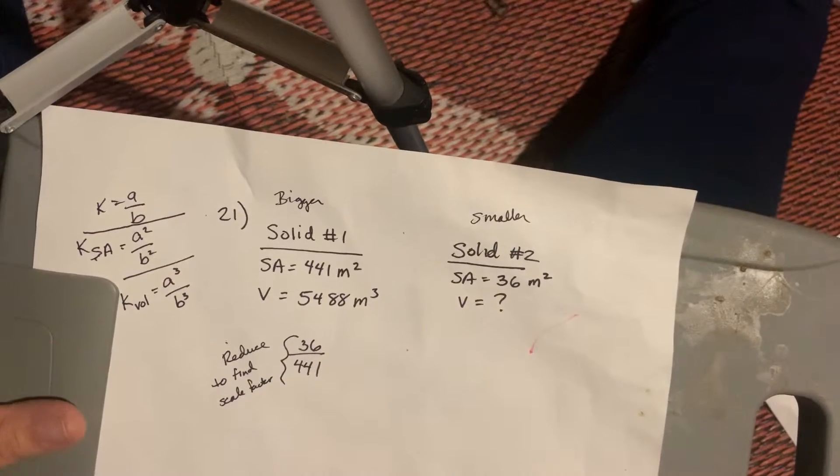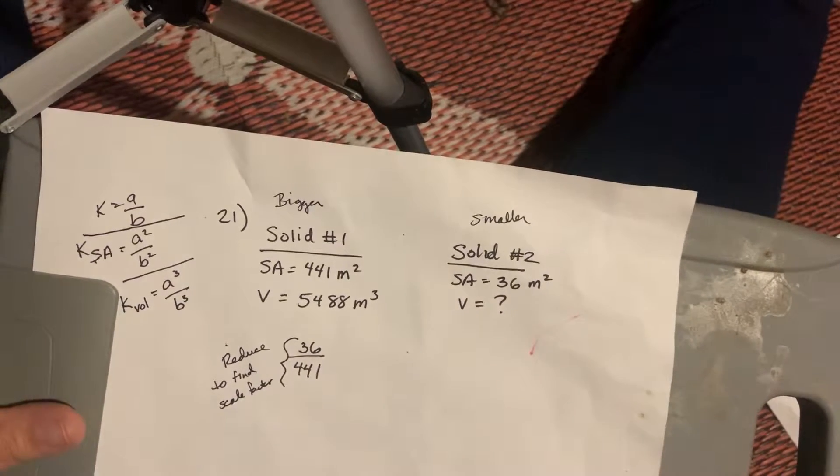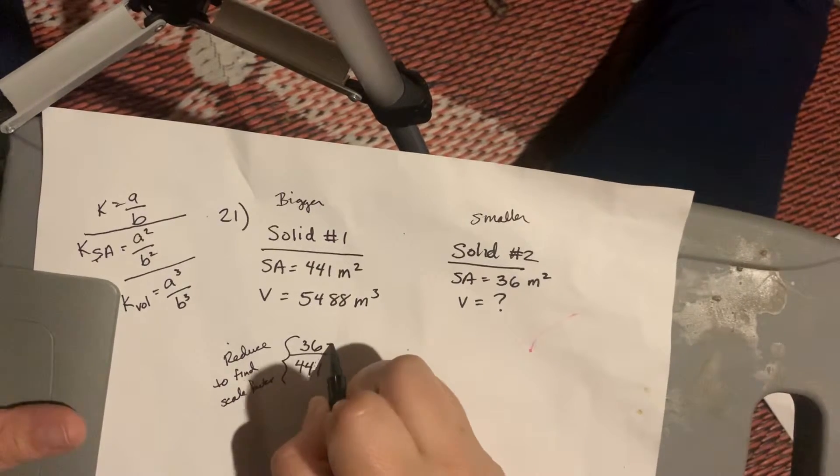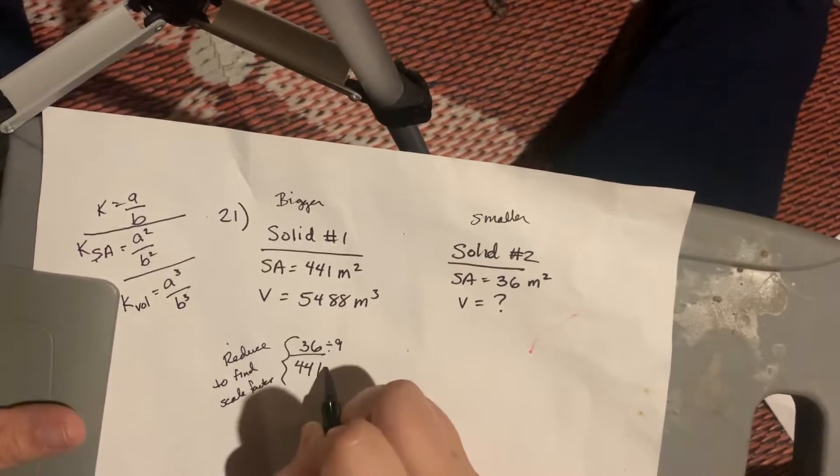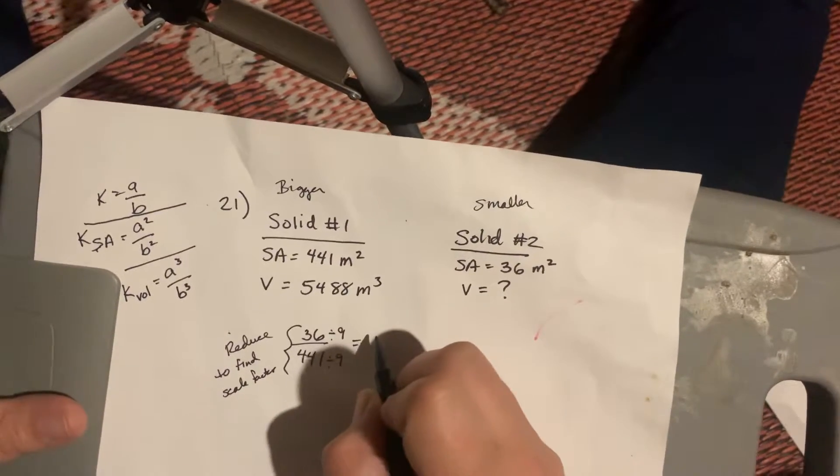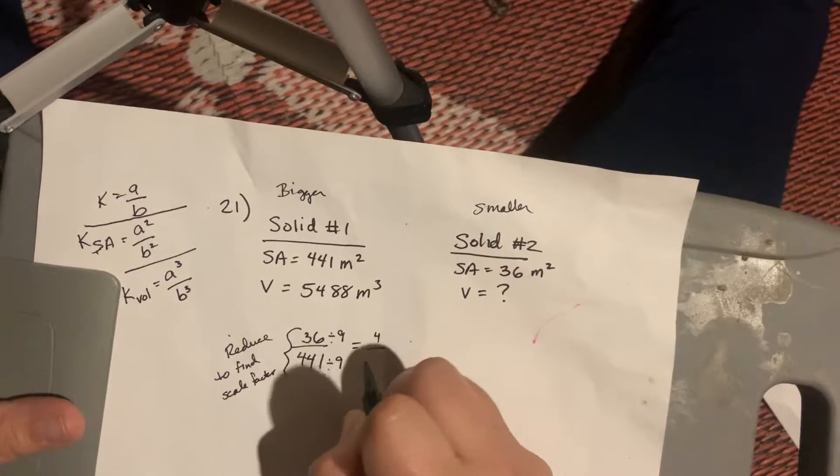Okay, so, in your calculator, you do 36 divided by 441, math, enter, enter. If you don't have a graphing calculator, you've got to think about what divides into them. I know that 36 can be divided by 9. I check to see if this one can be divided by 9. And, when I do that, I end up with 4 over 49.